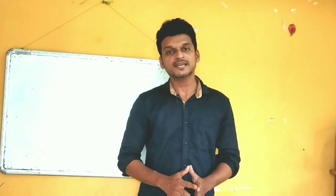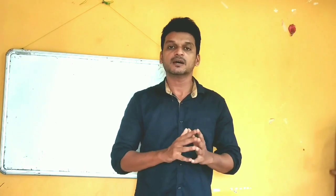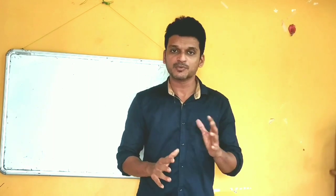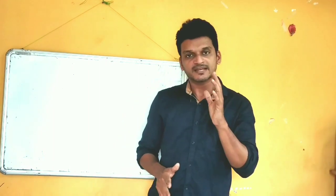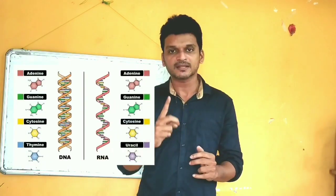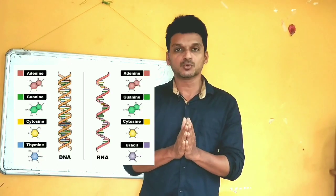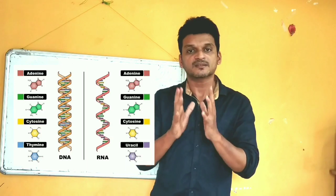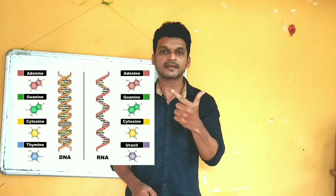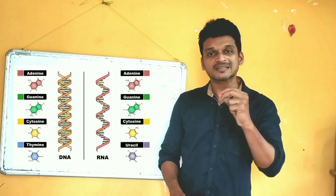Now let's move to our second molecule, RNA — ribonucleic acid. Let's find out the similarities between DNA and RNA. Just like DNA, RNA is also made up of strands, but in DNA there are two strands, while in RNA a single strand is present. This single strand is also made up of nucleotides, just like DNA, and each nucleotide is again made up of three components: phosphate, pentose sugar, and nitrogen bases.